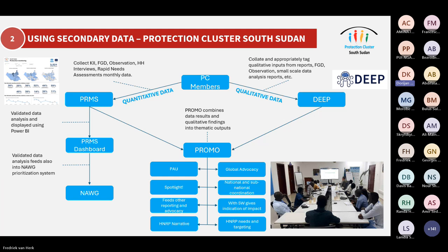Their key job is to produce a substantial number of various types of products: from the protection analytical update, a monthly protection spotlight, ad hoc advocacy pieces, the narrative for the humanitarian needs and response cycle, needs from the global protection cluster and AORs, national and subnational coordination together with Five W's, our risk assessment, food security which can also give some indication of impact, and helping with needs and targeting within the HRP. What was missing was DEEP.